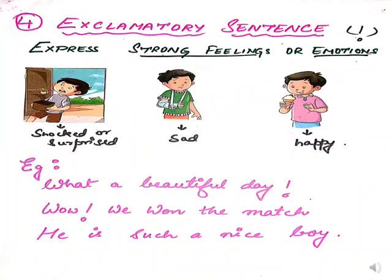Exclamatory sentences express strong feelings — like when you are sad, happy, shocked, or surprised. For example, if it is a very beautiful day, you say 'what a beautiful day!' If you win a match, you say 'hooray, we won!' or 'wow, we won a match!' That is an expression we are giving. So exclamatory sentences are expressions of strong feelings or emotions.